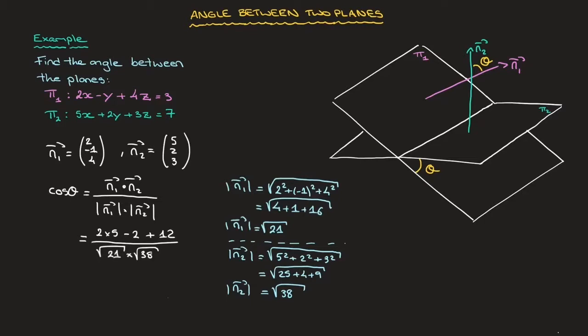And now, simplifying the numerator, we have 2×5, which is 10, minus 2, which is 8, plus 12, which is 20. So cos(θ) equals 20 over √21 times √38.